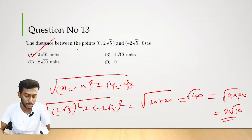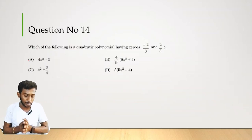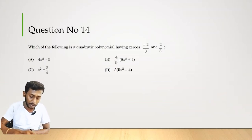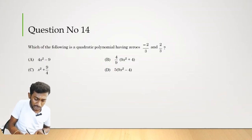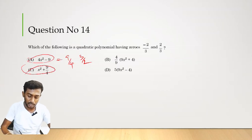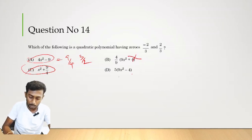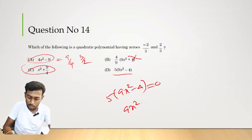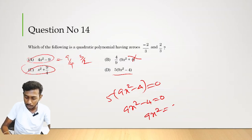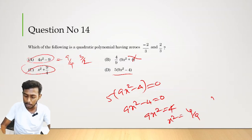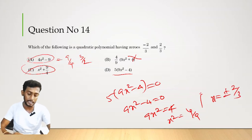Question number 14. Which quadratic polynomial has zeros −2/3 and +2/3? Testing option: 9x² − 4 = 0 gives x² = 4/9, so x = ±2/3. These match the given zeros. Therefore option D is the correct answer.